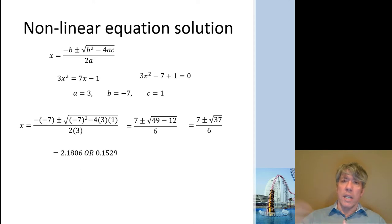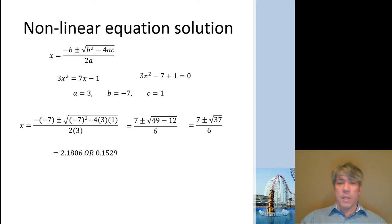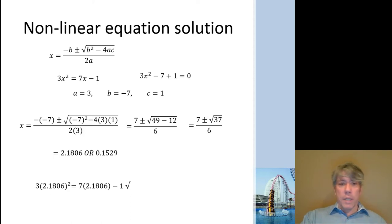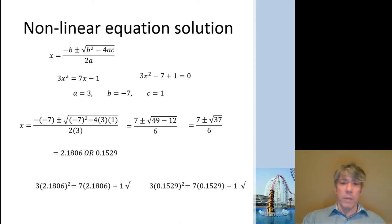Plugging into the quadratic formula gives two different solutions because of the plus-or-minus. There are two numbers that will solve the equation: 2.1806 and 0.1529. Be aware that quadratic equations — second-order polynomials — are not the only type of nonlinear problem. We may encounter equations requiring goal-seek in Excel, which is another way of solving these types of problems. I'll show you once or twice how to do that throughout the class. You'll really like it because it's an easy way to solve nonlinear equations.